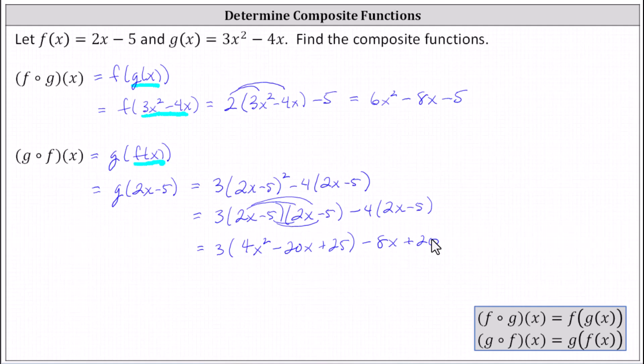Now we'll distribute the 3 and then combine like terms. Distributing 3, we have 12x squared minus 60x plus 75, minus 8x plus 20. Combining like terms, we have 2 x terms and 2 constants.